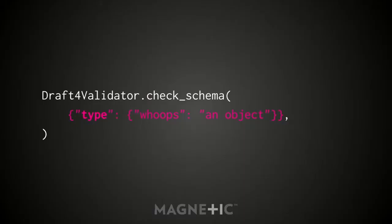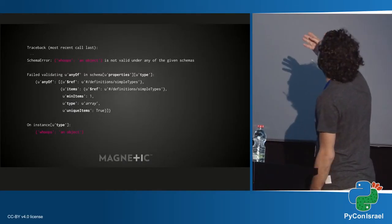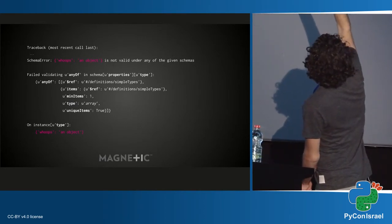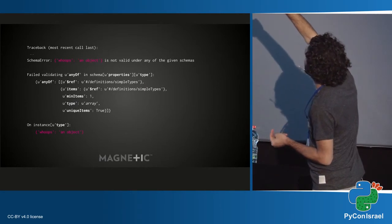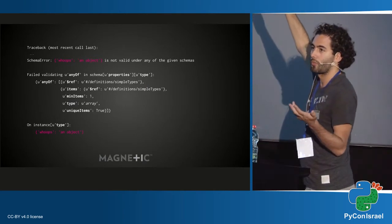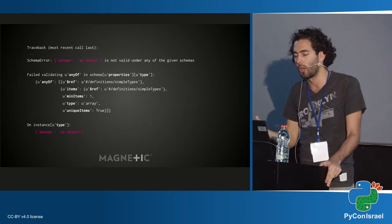Since schemas are JSON, you can use other schemas for their schemas — that's what meta schemas are. There is a meta schema defining what a valid schema looks like. Using the class method check_schema, you pass in a schema and it tells you whether it's valid. Passing an object for the type validator, which isn't the right type, gives a traceback saying it's trying to validate whether your type validator is valid — type needs to be one of the seven simple types or an array of them with at least one unique item. You can also pass the meta schema into a validator and use iter_errors to get all errors in a schema.